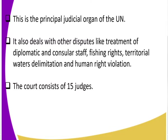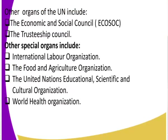One thing you must also know about the ICJ is that the court consists of 15 judges. It is the principal judicial organ of the United Nations. Apart from the ICJ, we have other organs of the United Nations — for example, we have the ECOSOC, which is the Economic and Social Council, which looks at the economic and social development of member states and whether developing countries need financial support. We also have the Trusteeship Council.